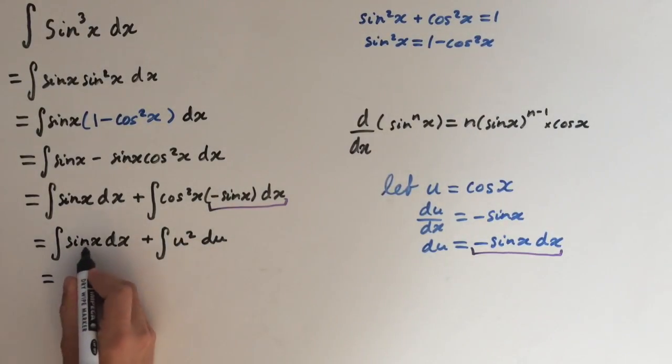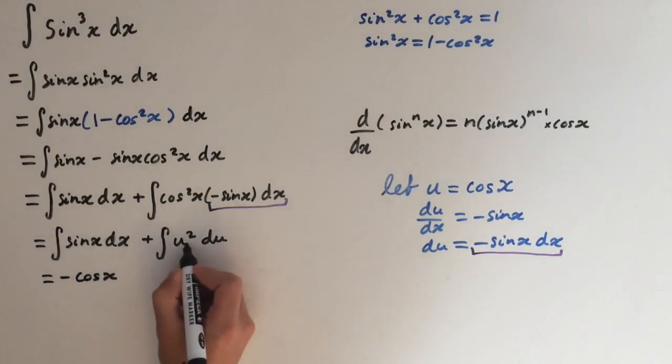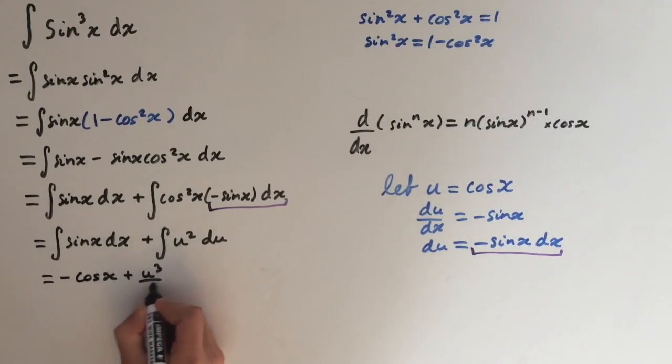This equals - the integral of sine of x is minus cosine of x, integral of u squared is u cubed over 3, and plus c.